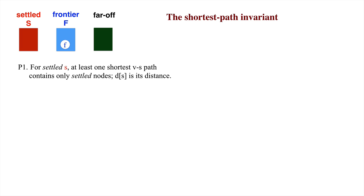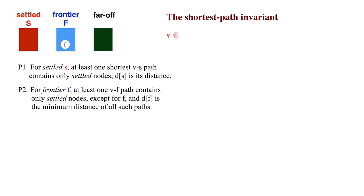Here's the second part of the invariant, 2. For a node f in the frontier, at least one path from v to f contains only settled nodes except for the last one, f. And d sub f is the minimum distance over all such paths.